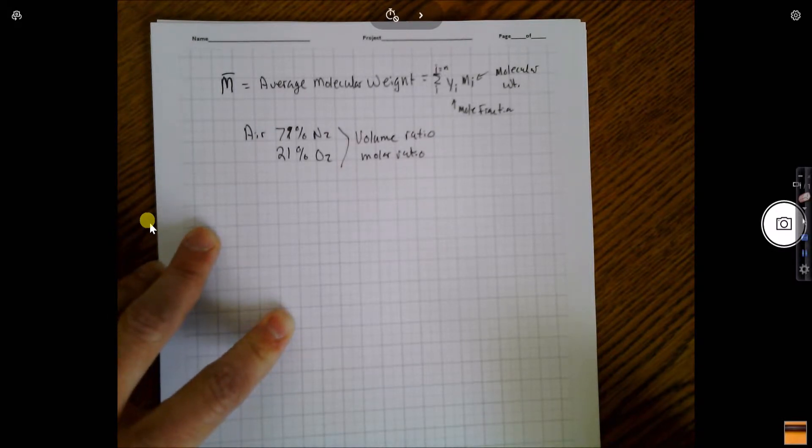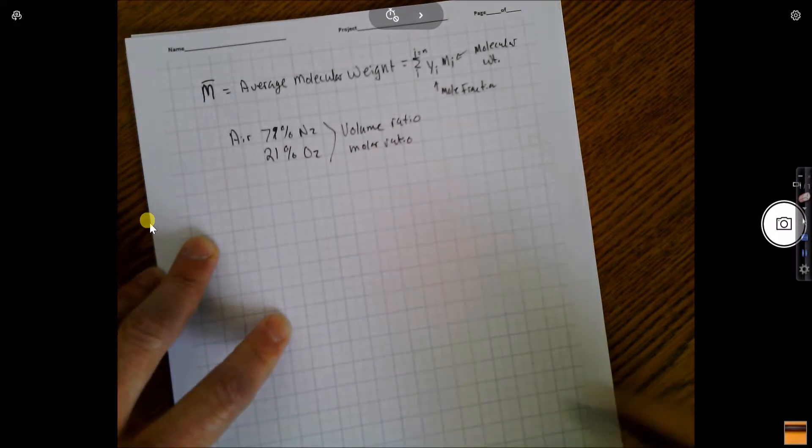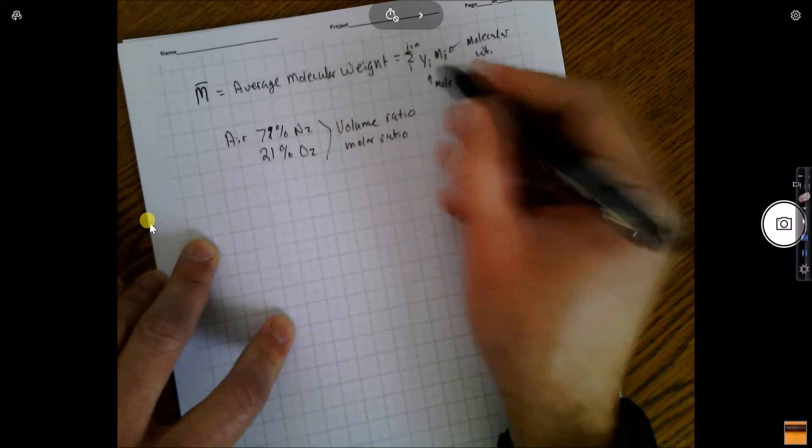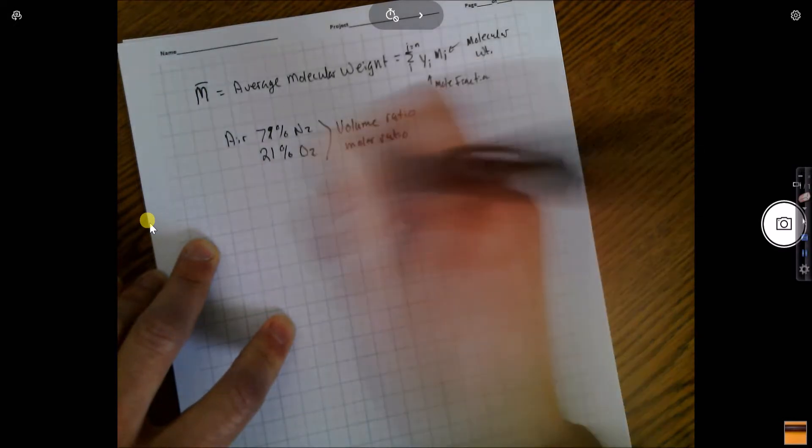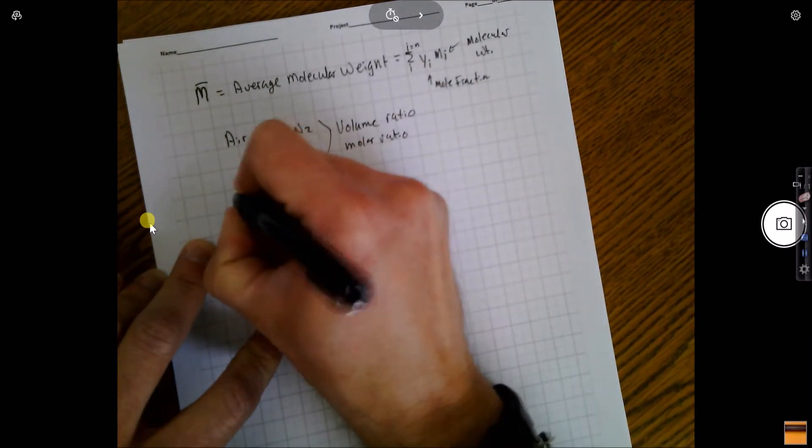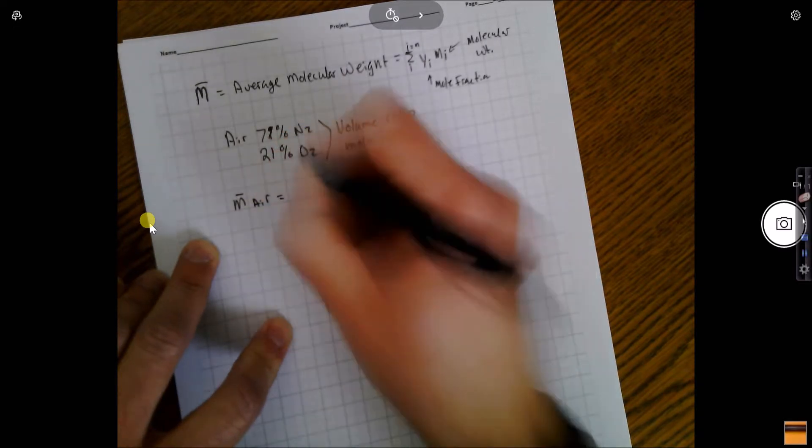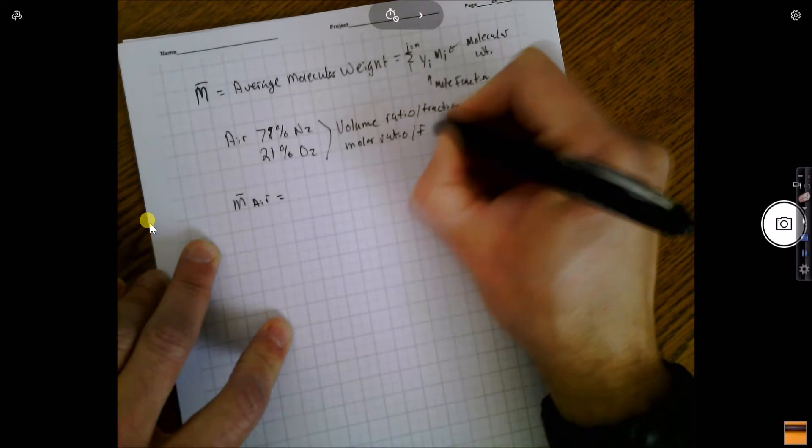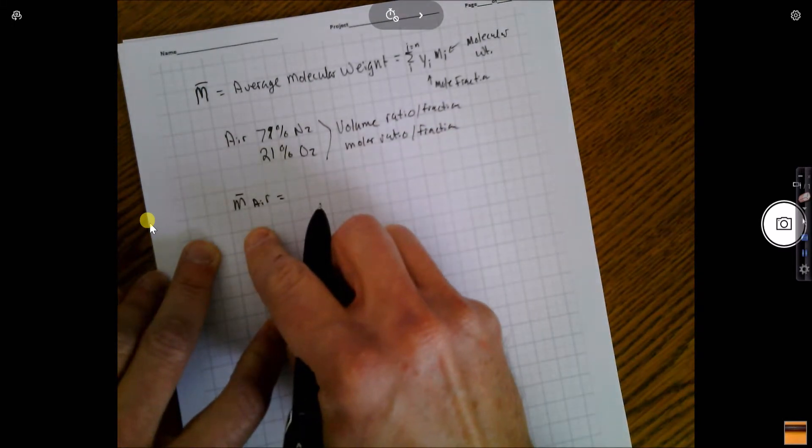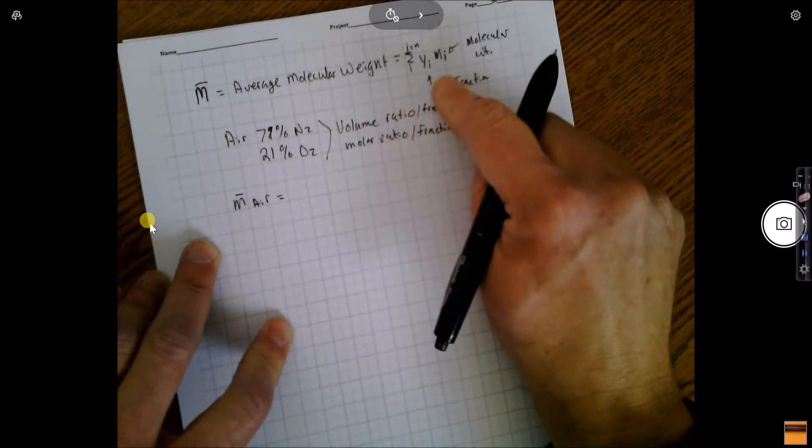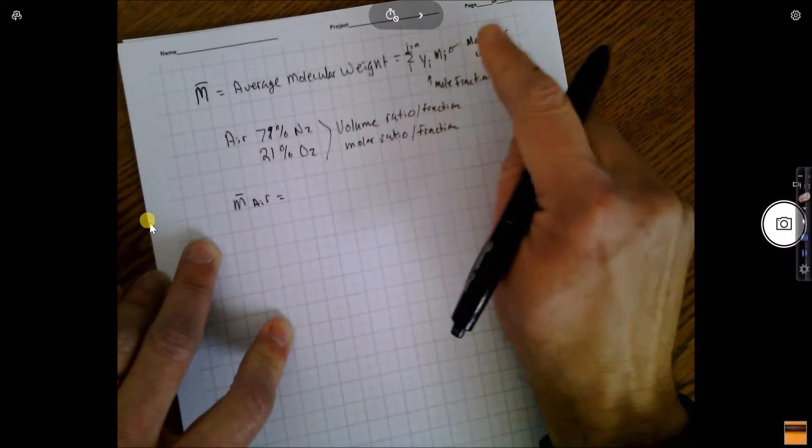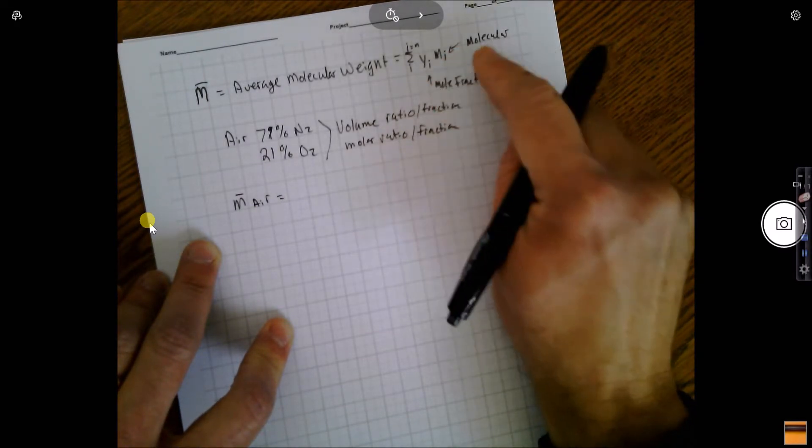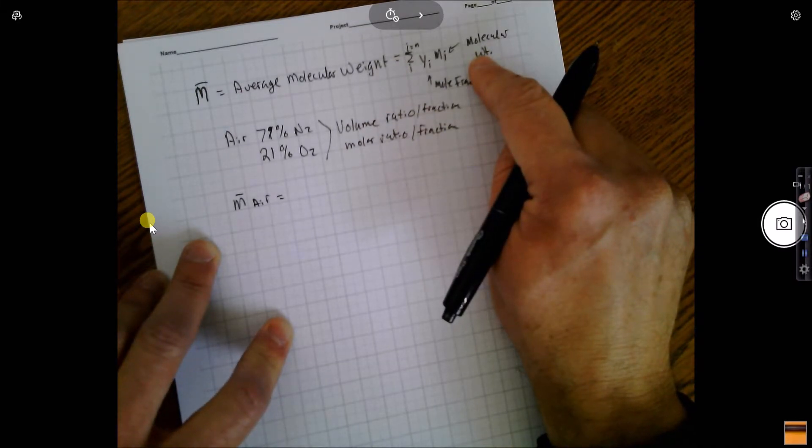This is a rule that applies to ideal gases. Let's do things in terms of kilogram moles just to get people familiar with the units. We look at our summation notation: we have mole fraction times molecular weight. The average molecular weight of air is the combination or summation of the mole fraction of nitrogen in air times the molecular weight of nitrogen, plus the mole fraction of oxygen in air times the molecular weight of diatomic oxygen.